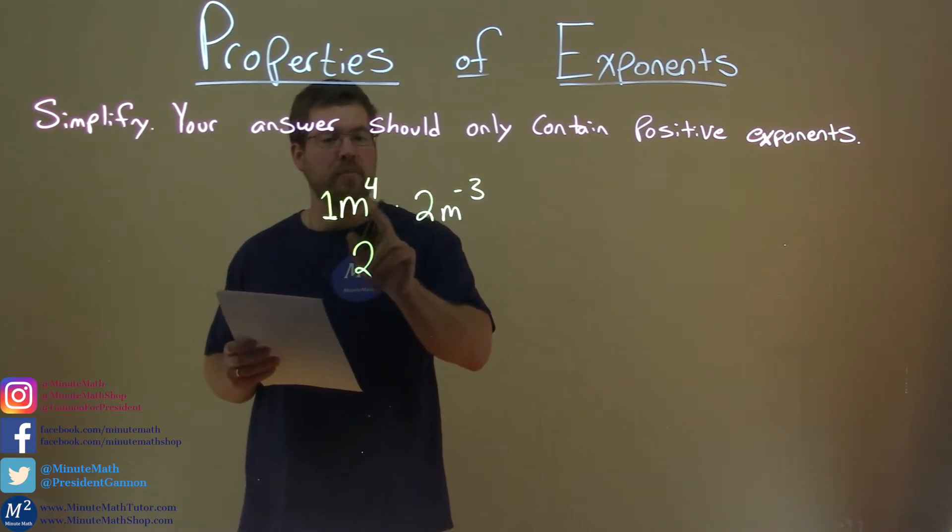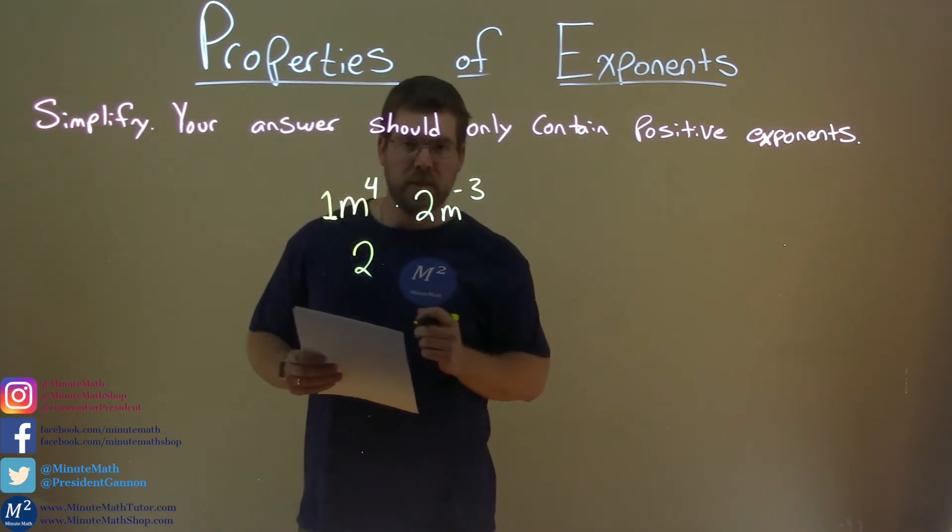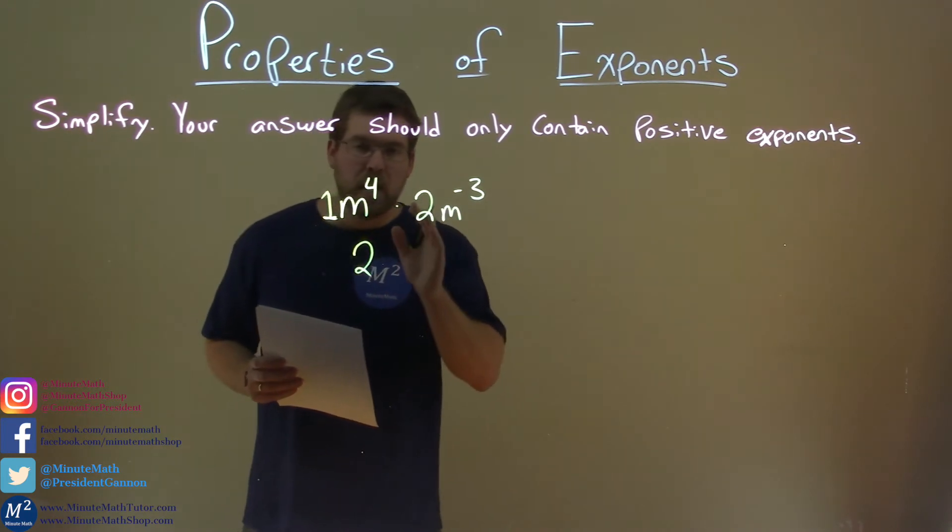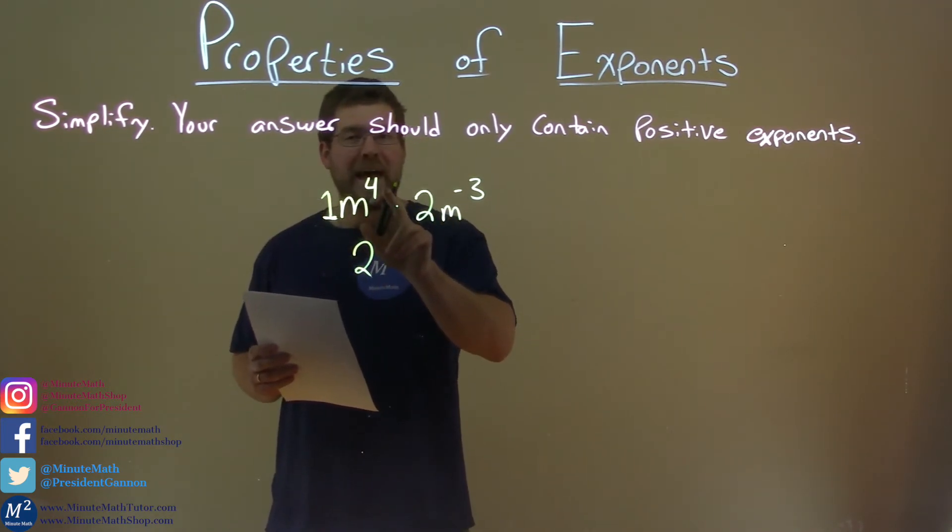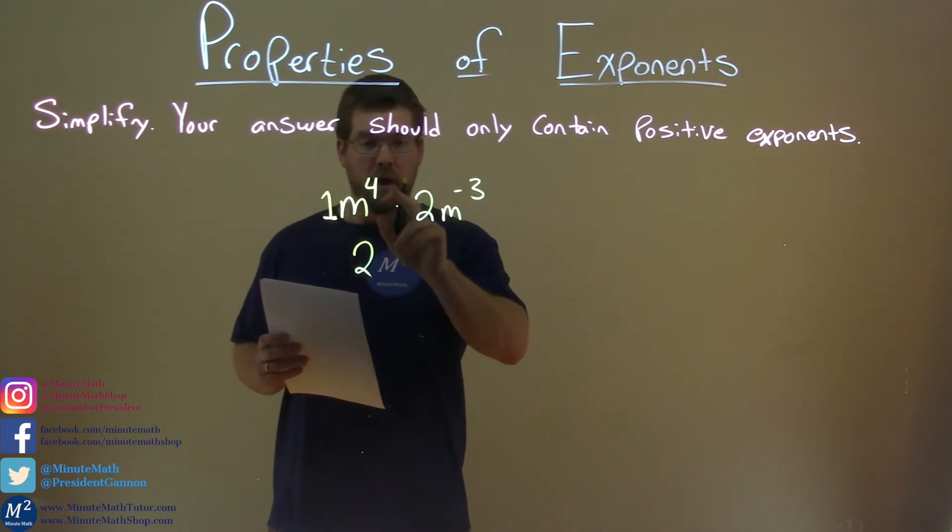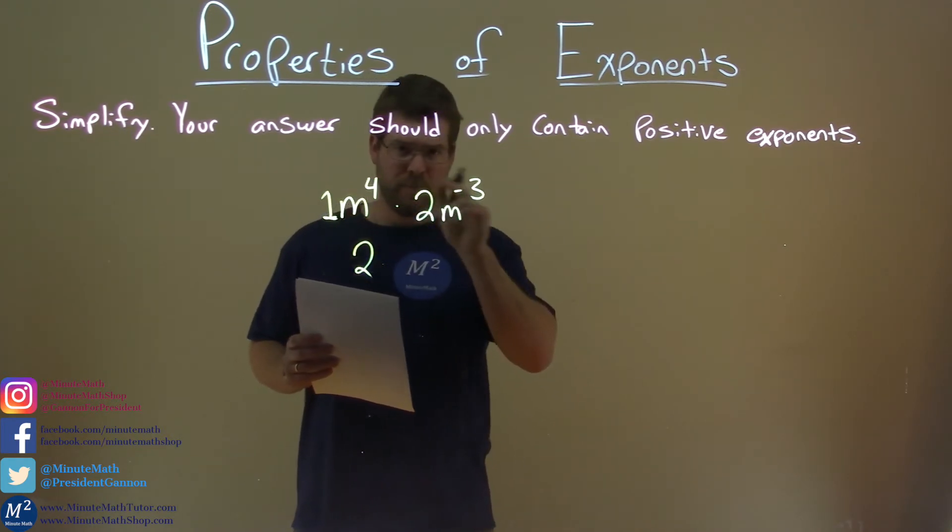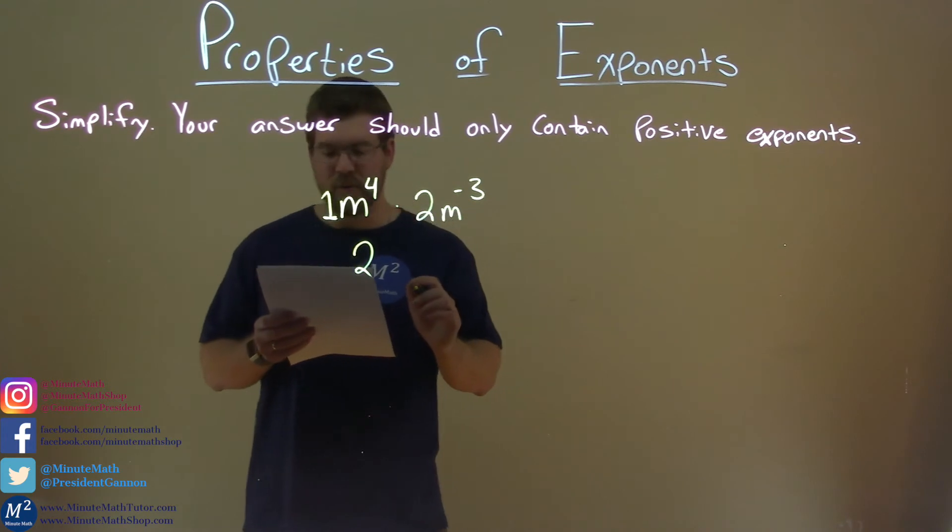Now we have the variables m to the fourth times m to the negative third power. When we have the same base and we're being multiplied, we have to add the exponents. 4 plus a negative 3 is a positive 1.